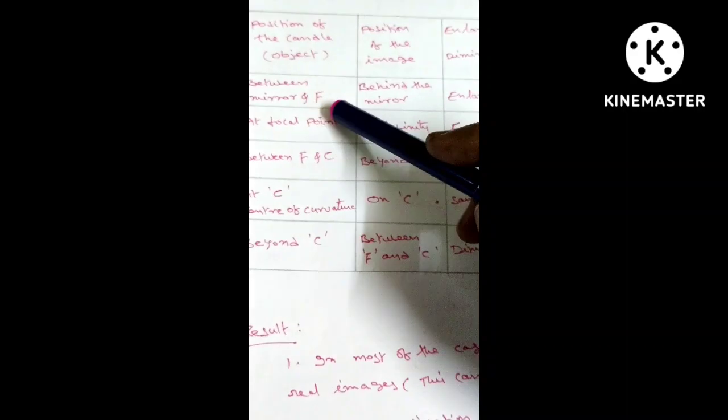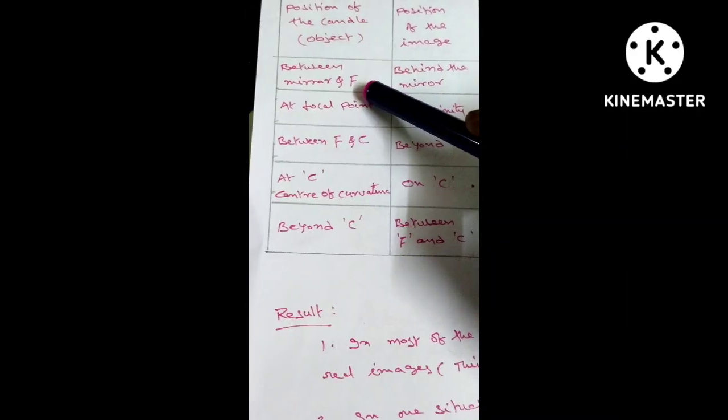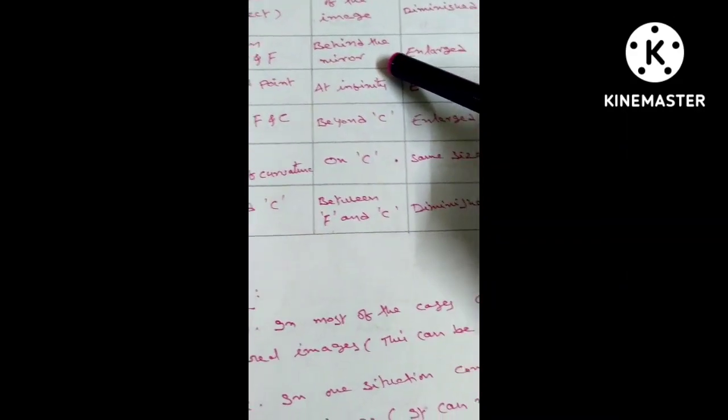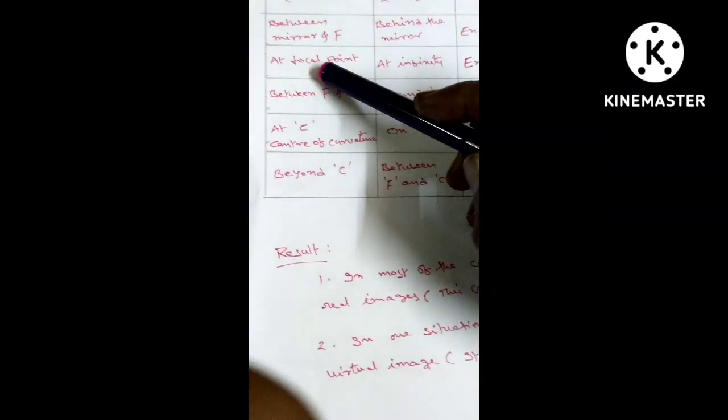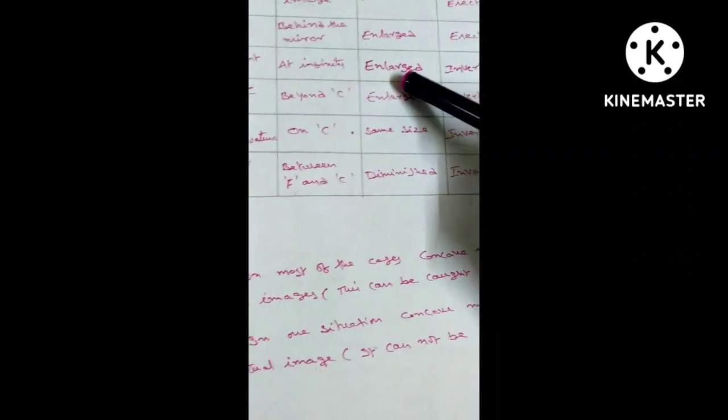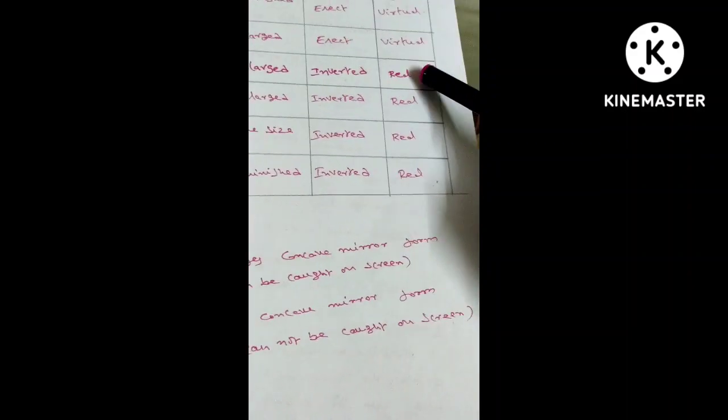Between mirror and F: Behind the mirror, enlarged, erect, virtual. At focal point: at infinity, enlarged, inverted, real.